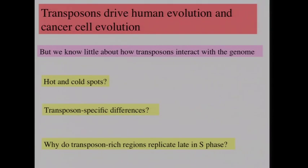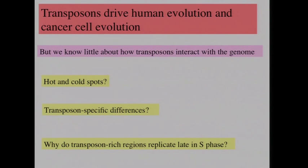These elements have a big effect on the evolution of the genome, but we know relatively little about how individual transposons interact with the genome. Why do they go to certain hotspots and avoid others? How different are the behaviors of one type of transposon versus another? Another general question we have very little understanding of is why so many transposon-rich and repeat-rich regions of the genome replicate late in S-phase. Late S-phase might be the biggest aspect of the cell cycle that remains almost completely not understood.